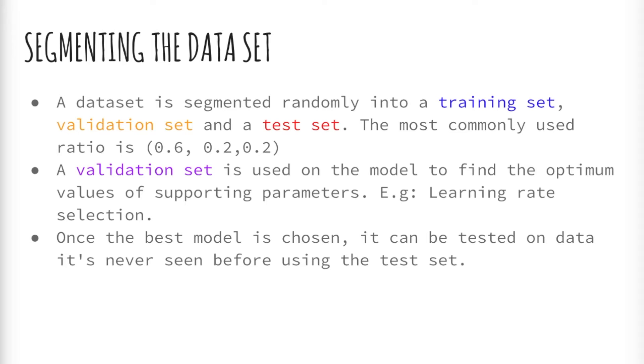The validation set is used to find optimum values of hyperparameters, such as the learning rate for gradient descent or the degree of polynomial. Once the model is chosen, it will be tested on the test set using fresh data.